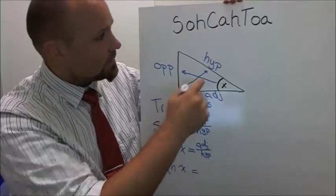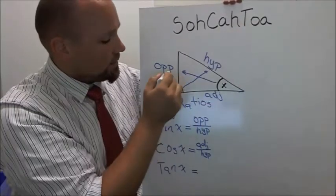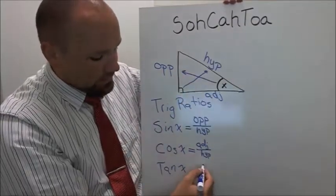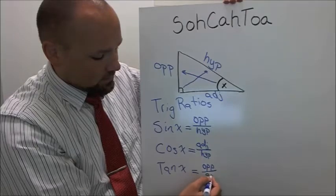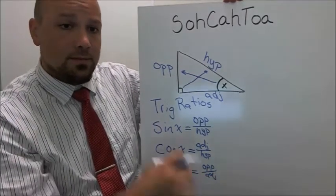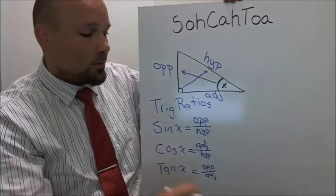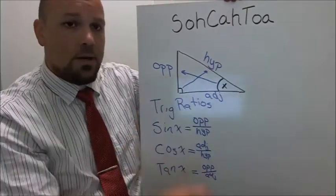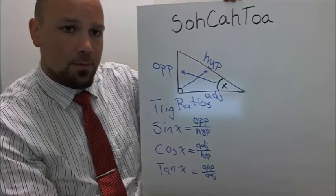Tan x is TOA, so that's opposite over adjacent. So those three things, if we can remember that, then we'll be able to solve many triangles that we can't solve with Pythagorean theorem.